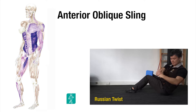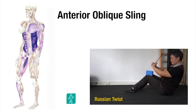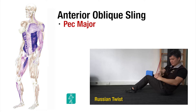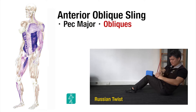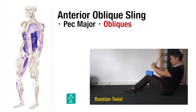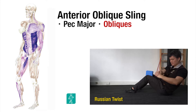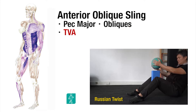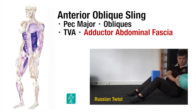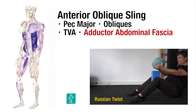The anterior oblique sling consists of the pec major, external obliques, contralateral internal obliques, transverse abdominis, and adductor abdominal fascia.